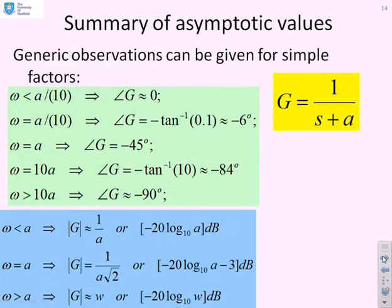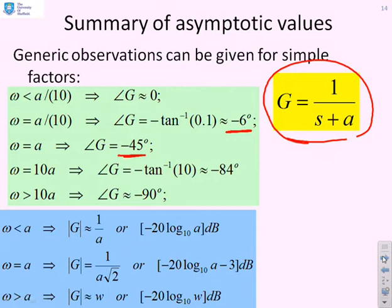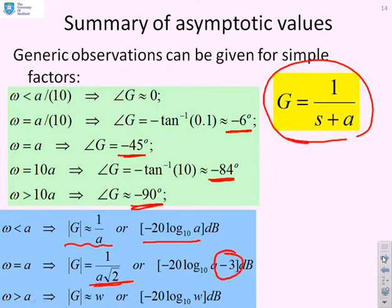For G(s) = 1/(s + a), the same approximations apply but phases are negative: −6 degrees at a/10, −45 degrees at a, −84 degrees at 10a, and −90 degrees for ω > 10a. For the gain: approximately 1/a (i.e., −20 log₁₀(a)) at low frequencies, a correction of −3 dB at the corner frequency, and a slope of −20 dB/decade for large frequencies.